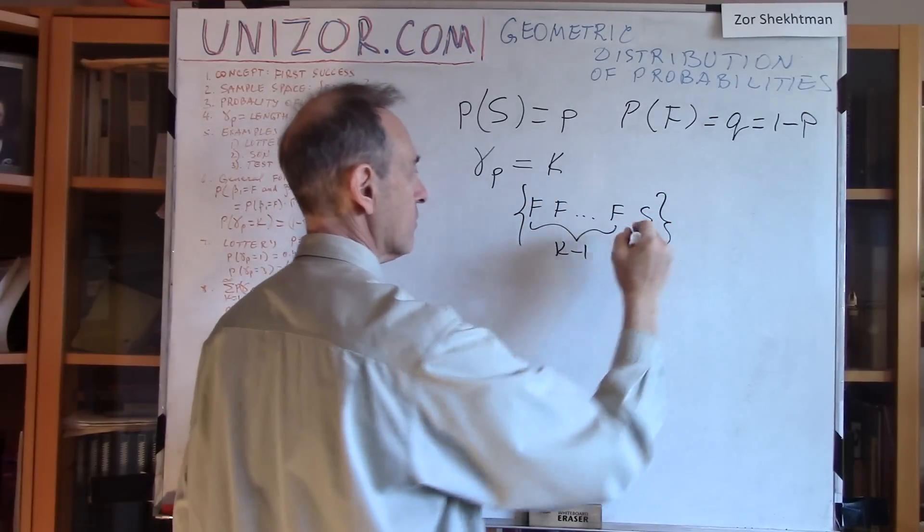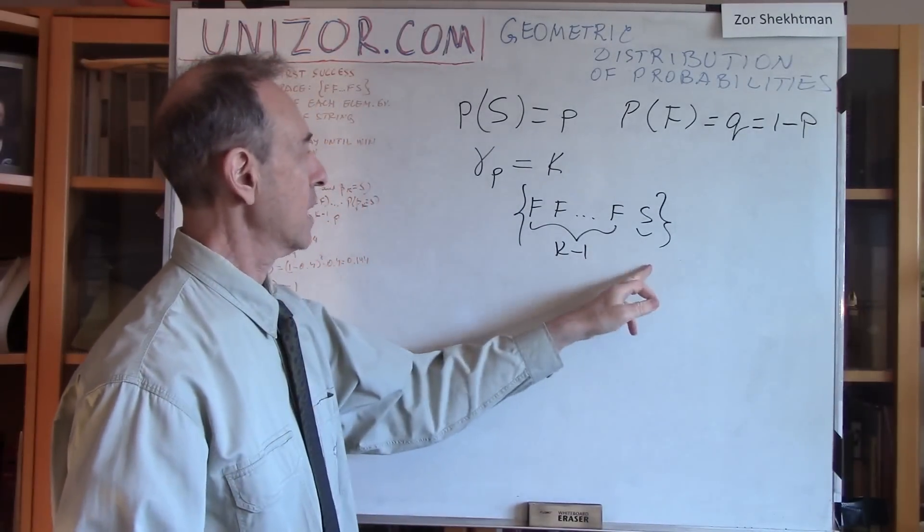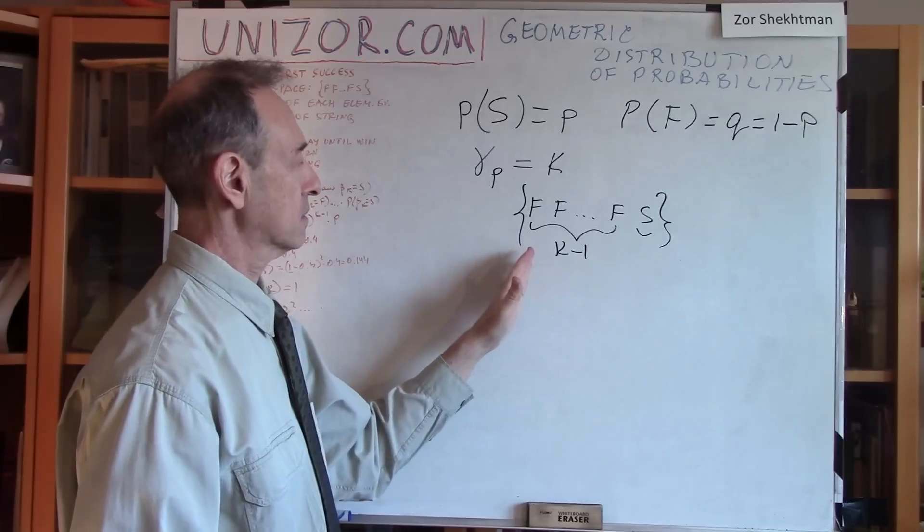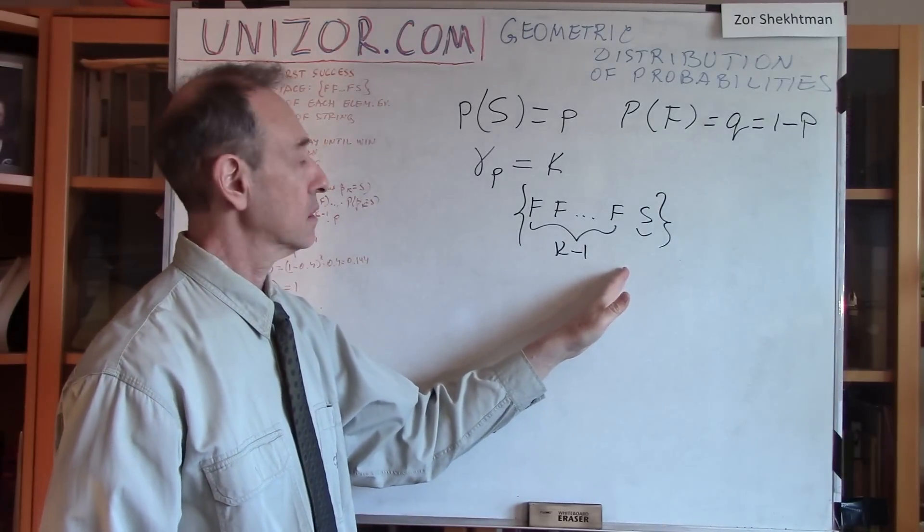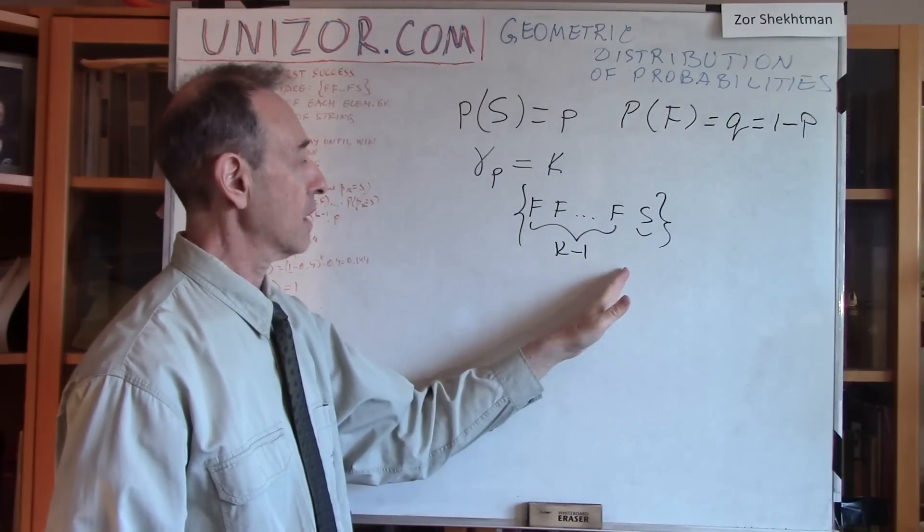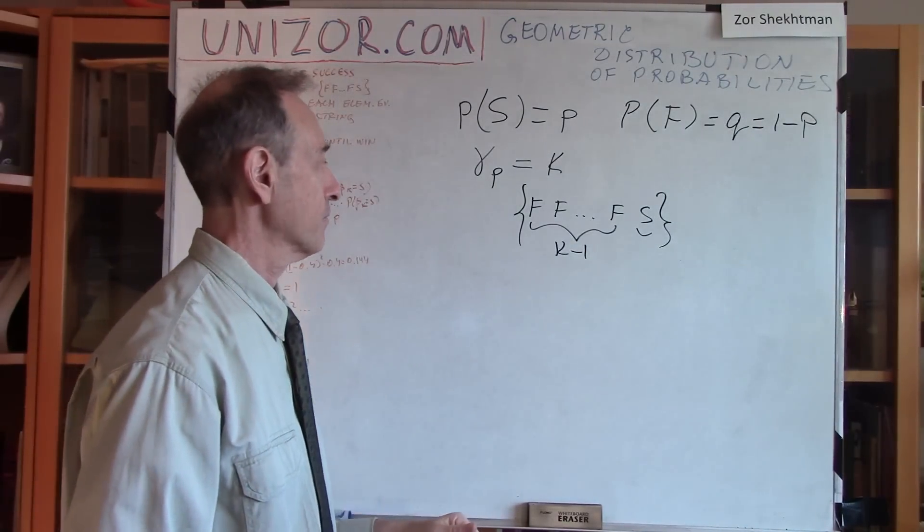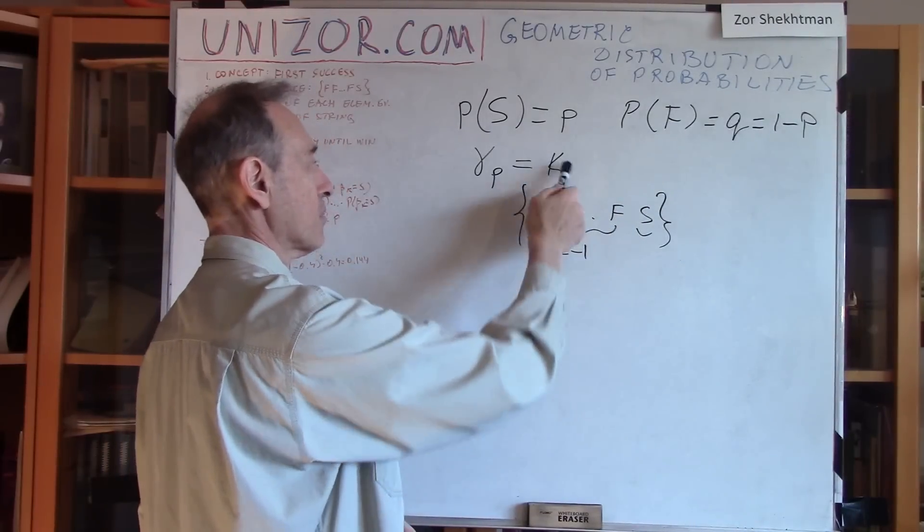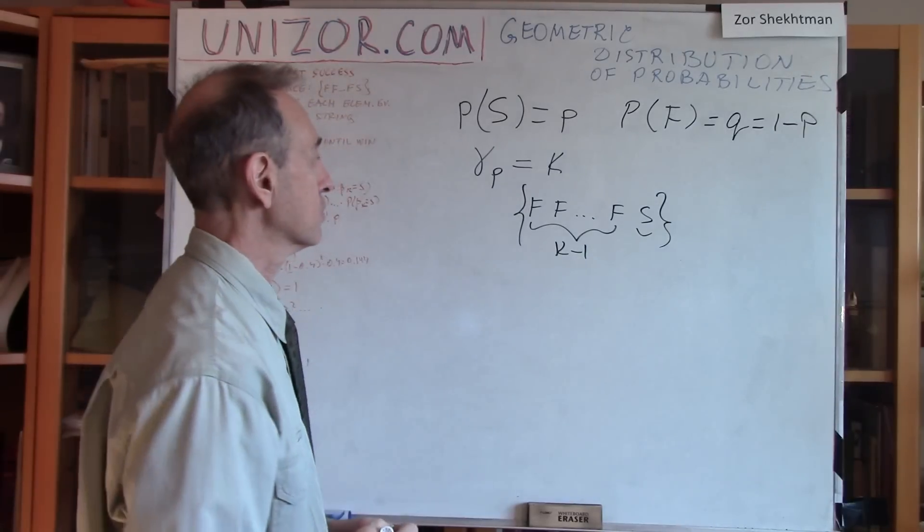This is an elementary event which has the length of K, which the length of this is number of experiments. It has fixed results in the first K minus 1 experiments, which are failures. And the Kth Bernoulli trial gives a success.